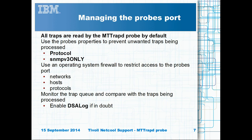The MT-TRAP-D probe reads everything that arrives at the given probe port. To prevent unwanted data being read, you should use a firewall to ensure only traps from the devices and networks being managed arrive at the probe's port for processing. The probe properties protocol and SNMP v3 only can be used to minimise the data the probe processes. The DSA properties can be enabled to log data sources when the probe is overloaded and unable to process data.